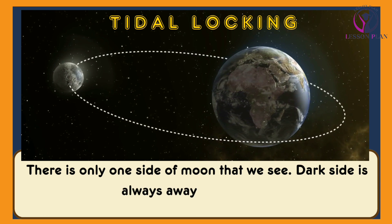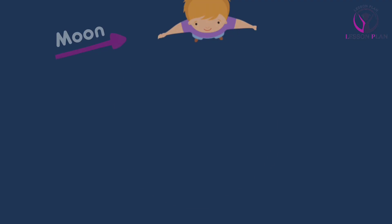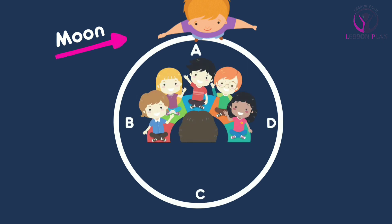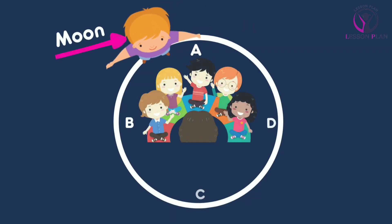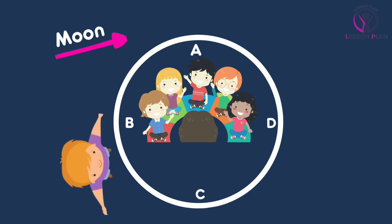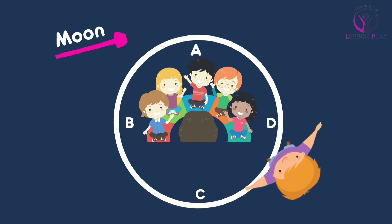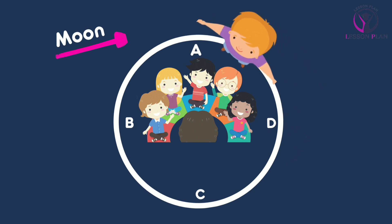Let's understand this with the help of an activity. One learner among you is going to be the moon, and the rest of the group will represent people on earth, standing together in the center of the circle, facing outwards and all looking at the moon. The learner acting as the moon needs to put both arms out to the side — look at the diagram.